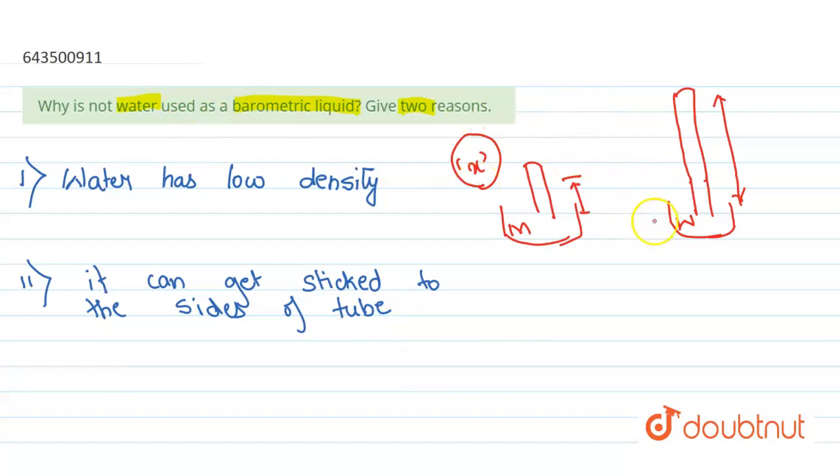Now what does this mean? So what can happen is, suppose if this is the barometer, the water can get stick in these sides of the tube as droplets here. It can get stick in the inner side of this tube as small droplets, which can give wrong readings. So if we are using water as a barometric liquid, it can result in a wrong reading of atmospheric pressure.